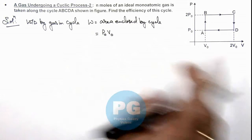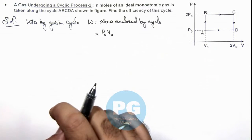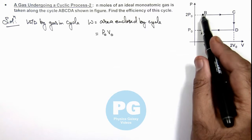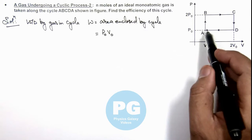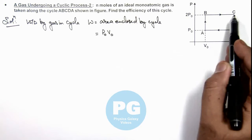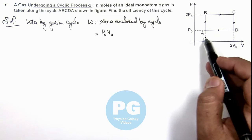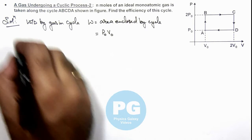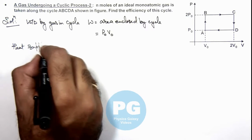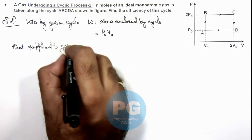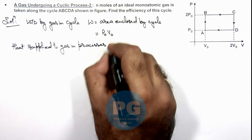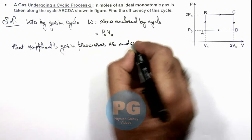Now to find efficiency we need to calculate the heat supplied in the process. So heat will be supplied in the process AB when at constant volume pressure is increasing, and in the process BC when volume is increasing. In process CD and DA heat will be absorbed. So now we calculate the heat supplied to gas in processes AB and BC.